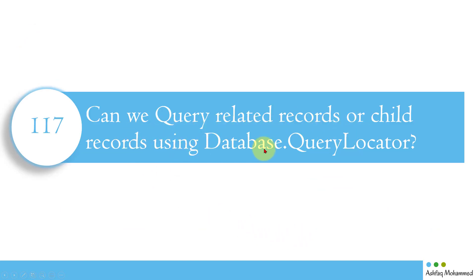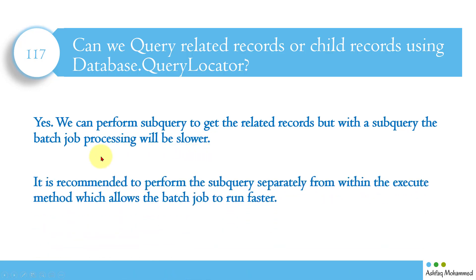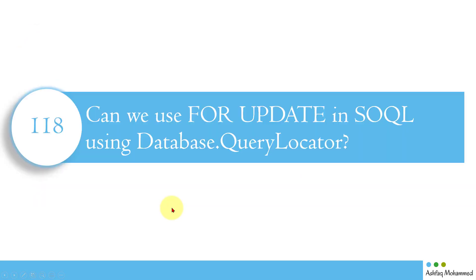The next question is: can we query related or child records using Database.QueryLocator? Yes, we can perform a subquery to get related records, but the batch job processing will be slower. It is recommended to perform the subquery separately from within the execute method, which allows the batch job to run faster. Write a separate query for the related object instead of a subquery in a single query.